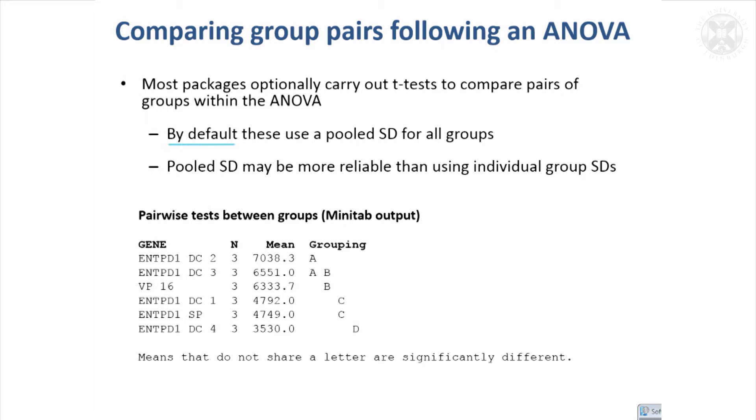By default, these use a pooled standard deviation or variance for all the groups, and quite often it's more reliable, particularly when you've only got three values per group. You wouldn't really want to get a standard deviation from just three values. The packages handle this all in different ways.